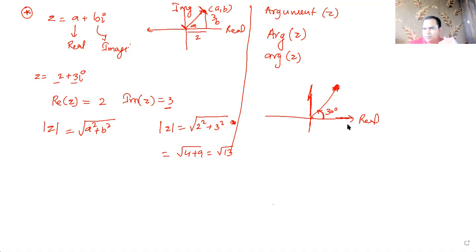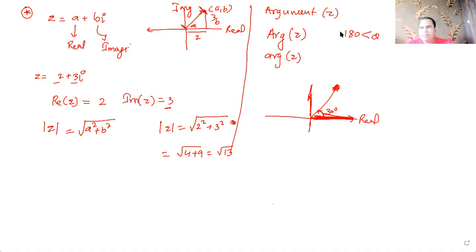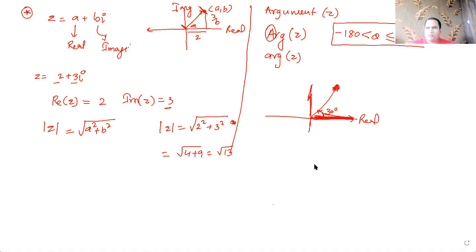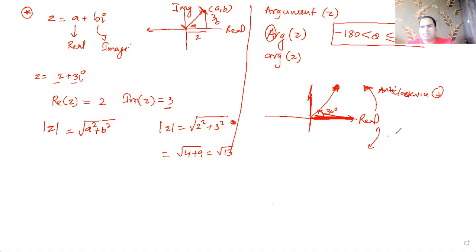There are important specifications to remember. The angle is always measured from the positive direction of the real axis. If the angle is between -180° and 180°, it is called the principal argument, written as Arg(z). Anti-clockwise angles are taken as positive and clockwise angles are taken as negative.